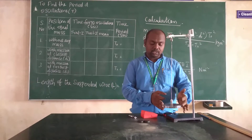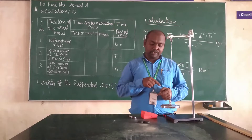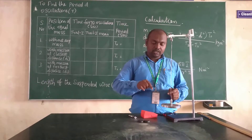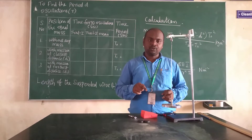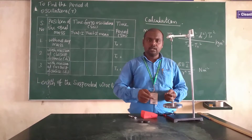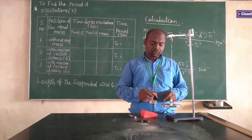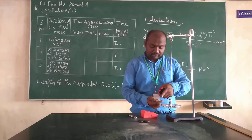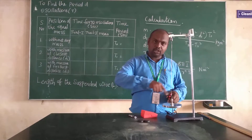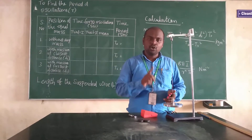First, give a small twist to this wire. It starts to oscillate clockwise and also anticlockwise — one complete clockwise and one complete anticlockwise. At any turning point we choose to start counting ten oscillations. One complete clockwise and one complete anticlockwise comprises one oscillation.